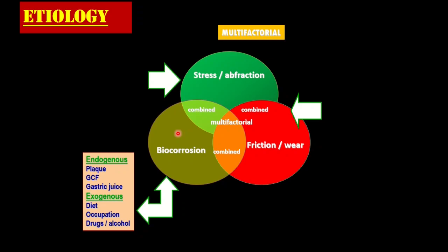Suppose a person develops an erosive lesion because of his habit of taking high-citrus food items. He develops an erosive lesion, and the same person has a faulty habit of brushing teeth, so he will have both erosive and abrasive lesions. When these two factors are combined with faulty occlusal forces or parafunctional habits, the lesions become erosive, abrasive, and abfractive in nature. They can occur sequentially, synergistically, or alternatively. The knowledge of multifactorial etiology in non-carious cervical lesions is very important to formulate the appropriate treatment plan.